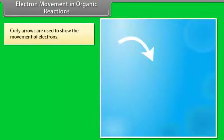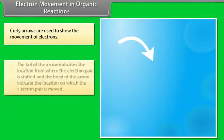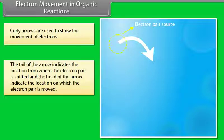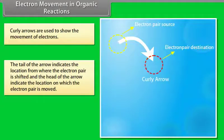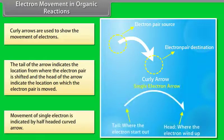Electron movement in organic reactions — curly arrows are used to show the movement of electrons. The tail of the arrow indicates the location from where the electron pair is shifted, and the head of the arrow indicates the location to which the electron pair is moved. Movement of a single electron is indicated by a half-headed curved arrow.